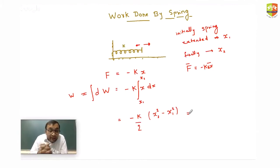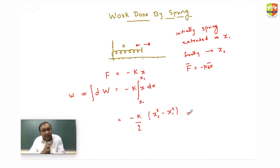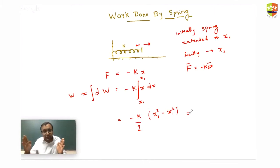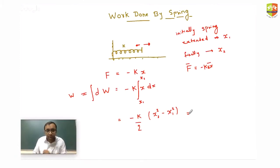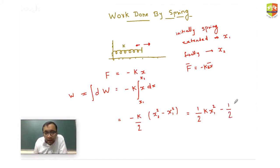The work done is negative because when the spring is already extended and you extend it further, the spring force acts in the opposite direction to the displacement — there is 180 degrees between force and displacement. So work done by the spring equals (1/2)kx1² minus (1/2)kx2².